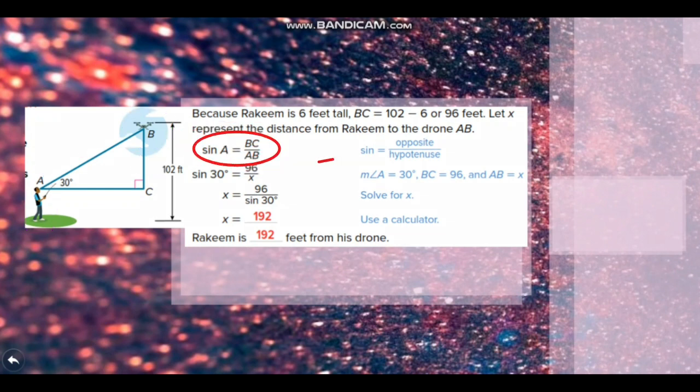Because sin 30 equals 96 over x, so we can find the x. By solving for x, you will divide 96 over sin 30. The answer will be 192 feet from his drone.